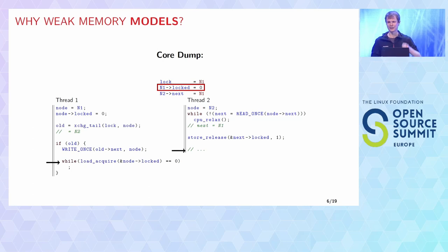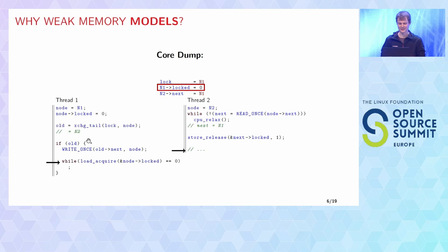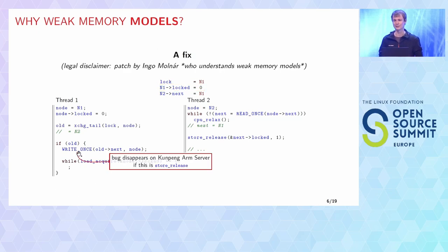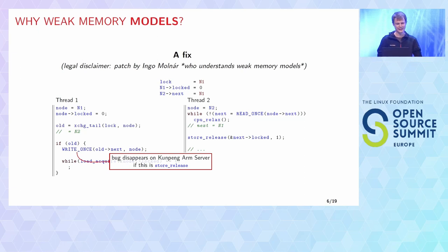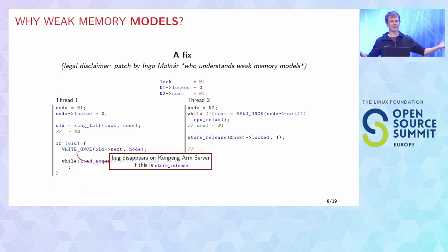I ask the audience: do you have any idea where to insert the barrier to fix this code? Where we need to insert the barrier is that the write-once needs to be a store release. You can see this is almost impossible to guess — I have never had anyone guess correctly where the barrier needs to be put. We changed the write-once to store release and the bug disappears on the Ampere ARM server, for example.